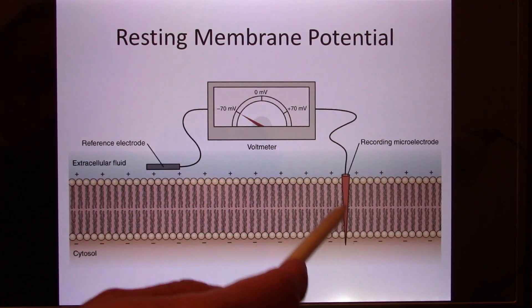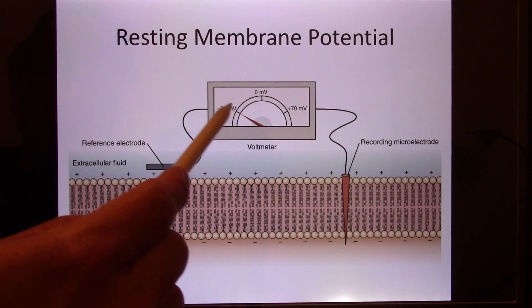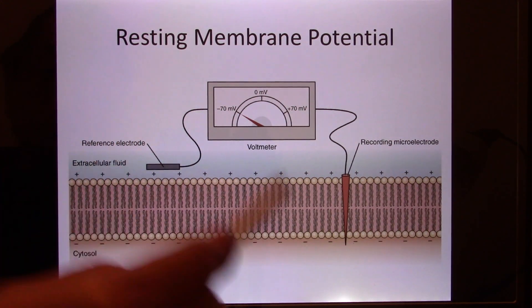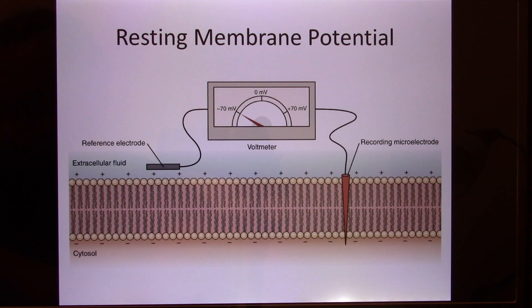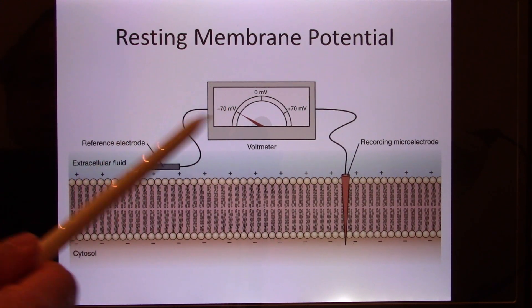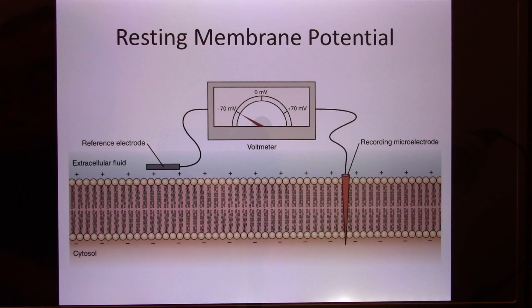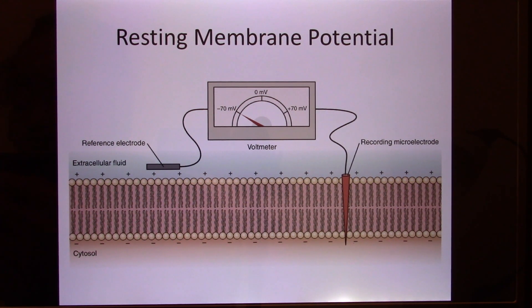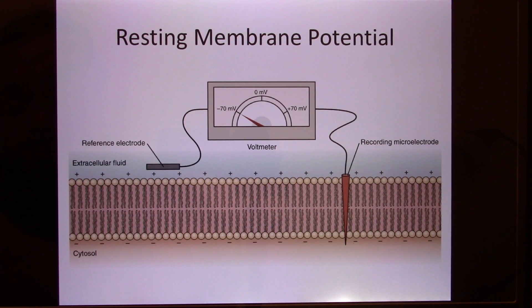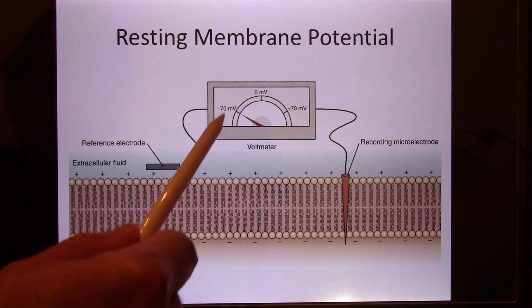When you put the electrode into the cell and measure the voltage, you find inside is about minus 70 millivolt compared with outside — so inside is negative compared with outside. For muscle, inside is a little bit more negative, about minus 90 millivolt. It turns out every living cell in your body has an inside more negative than outside. If you took anatomy, you learned all body cells can be classified into epithelium, connective, muscle, and neurons.